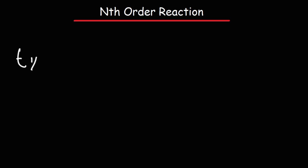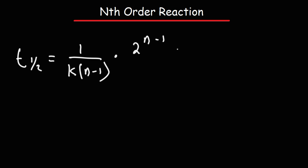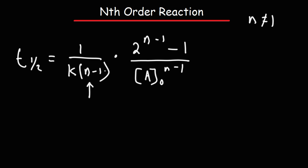If you want to calculate the half-life for the nth order reaction, here is the formula. It's 1 over k times (n minus 1), where n represents the order, k is the rate constant, and it's times 2 raised to the (n minus 1) minus 1, divided by a_initial raised to the (n minus 1). However, this formula doesn't work for a first order reaction, because if you plug in 1, you get a zero in the denominator, making it undefined. So this formula doesn't work when n is 1.